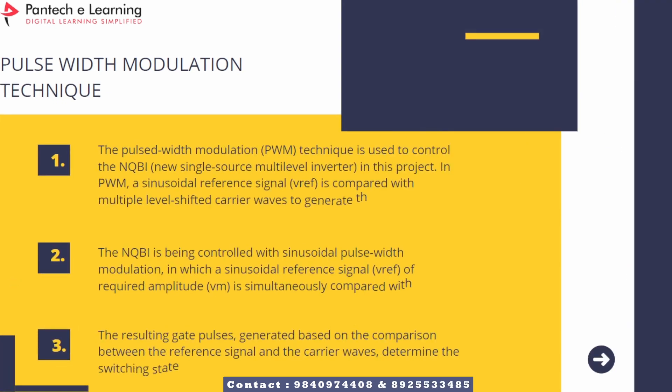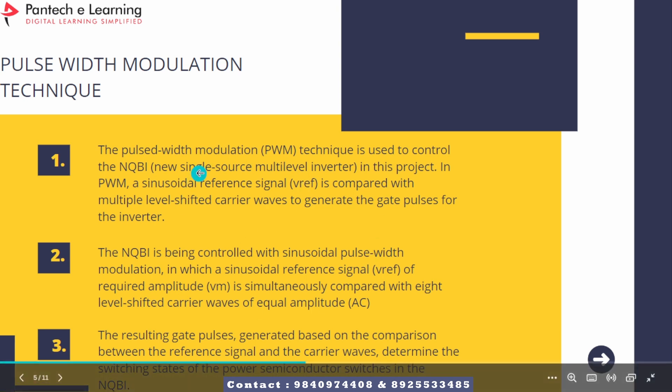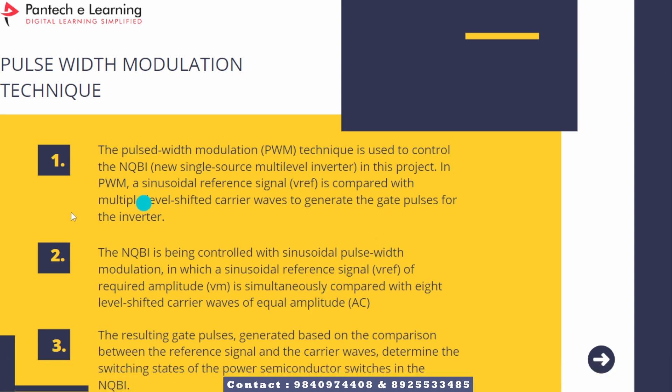Next, we are going to use a pulse width modulation technique. This PWM technique is used to control the new single-source multi-level inverter. A sinusoidal reference is compared with multiple level-shifted carrier waves to generate the gate pulses for the inverter. The main purpose of PWM is to generate a modulated signal that approximates the shape of the reference signal, allowing control of the output voltage magnitude.